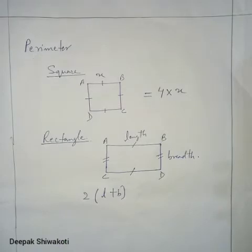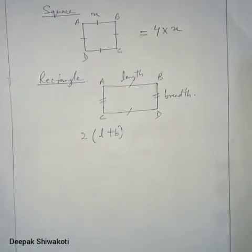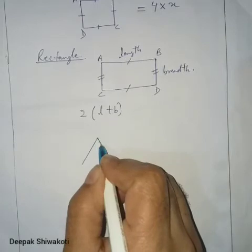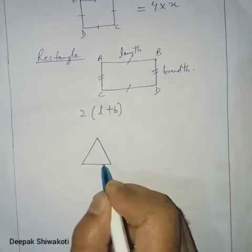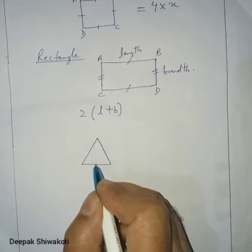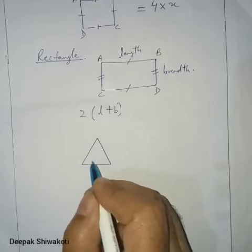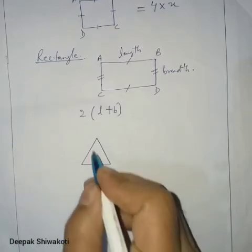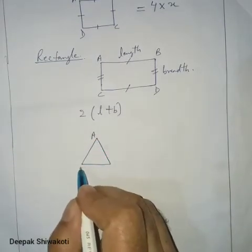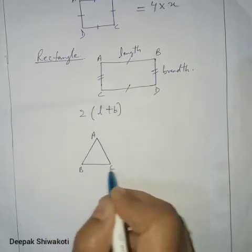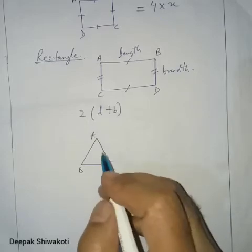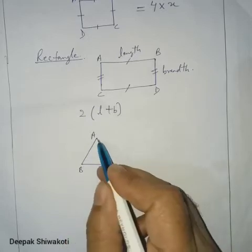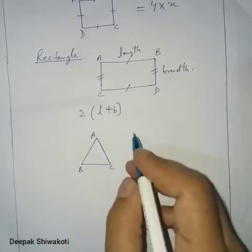Now let's discuss the perimeter of a triangle. A triangle can be any type — isosceles, equilateral, or scalene. The triangle is made up of three line segments: AB, BC, and CA. Adding the lengths of AB, AC, and BC gives us the perimeter of the triangle.